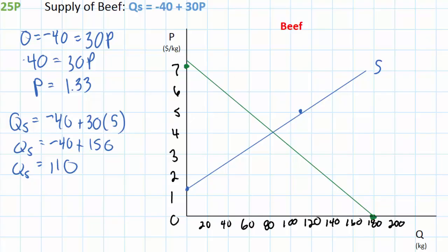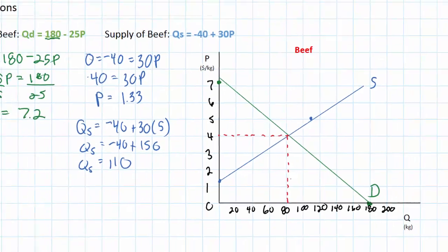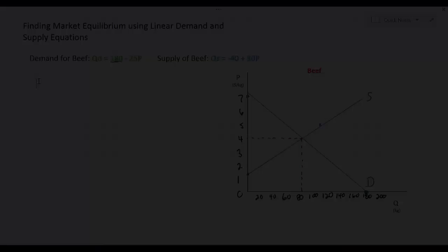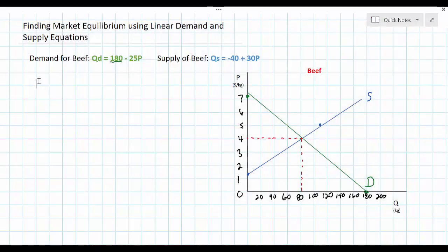I've now drawn both my demand curve and my supply curve for beef. It would be simple enough to estimate the equilibrium price by looking at the intersection of demand and supply, but we also need to be able to calculate equilibrium price and quantity using the equations themselves. From the graph it looks as if the equilibrium price is going to be around $4 and the equilibrium quantity of beef will be around 80 kg. Just to prove these estimates are correct, we're going to show how to calculate equilibrium price using the equations.